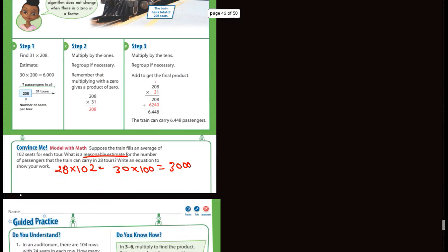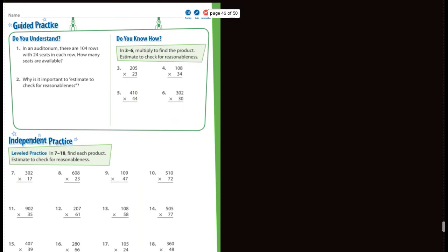So let's go down to the guided practice. In an auditorium, there's 104 rows with 24 seats in each row. How many seats are available? You guys can do that one.